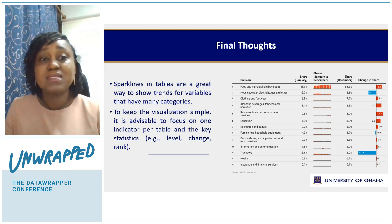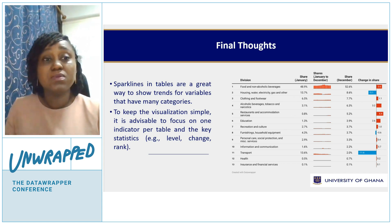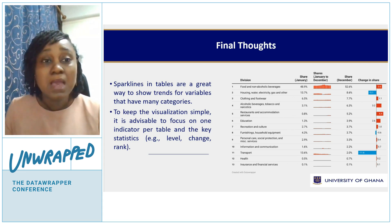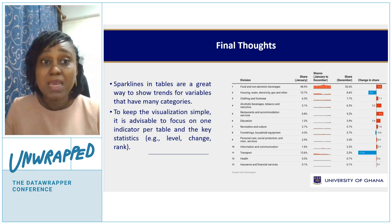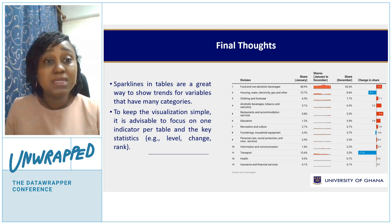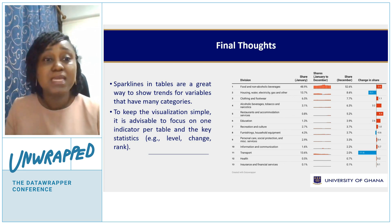My personal preference is to focus on one indicator in the table. Yes, you could theoretically have five or six different small charts in one table, but for simplicity and to make the messaging clear, I would advise keeping it to one indicator. In the example we showed, we had the trend in the indicator, the change over the period, and the change in the rank — so it's really all around the same indicator, and it's quite simple.